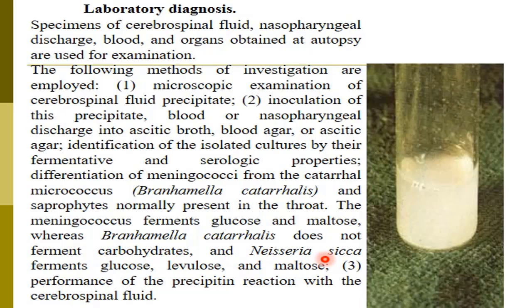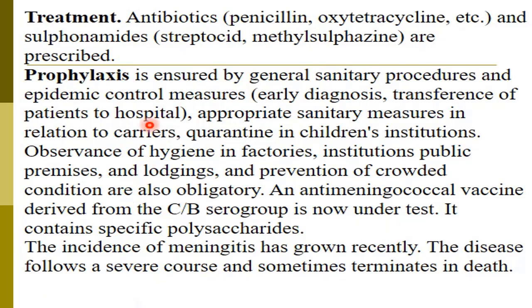For microscopic examination, culture, and performance of the precipitation reaction with the CSF, treatment of meningococcal meningitis involves antibiotics such as penicillin, oxytetracycline, and sulfonamides including streptocid and methylsulfazine. All of them are prescribed in the treatment of Neisseria meningitidis. Recently, beta-lactamase enzyme may be produced by Neisseria meningitidis against beta-lactam drugs, so other alternative drugs may be used.